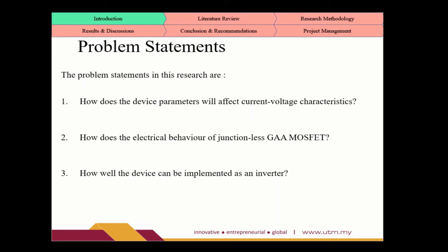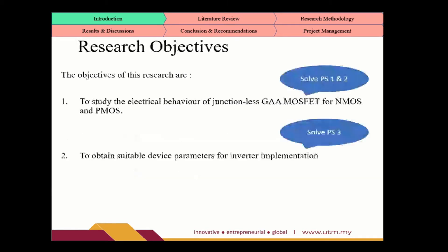The proposed problem statements in this research are: first, how does the device parameters affect current-voltage characteristics? Second, how does the electrical behavior of junctionless GA MOSFET, and how well the device can be implemented as an inverter?